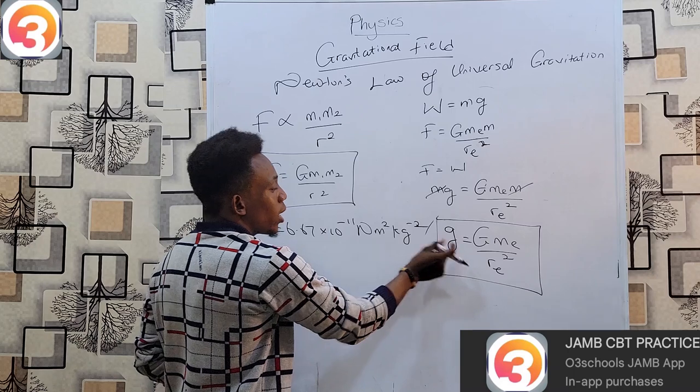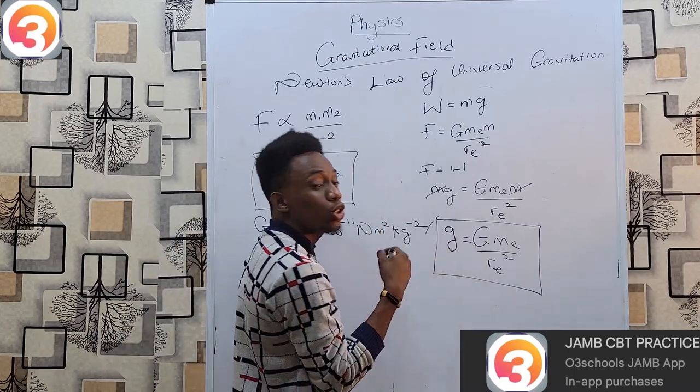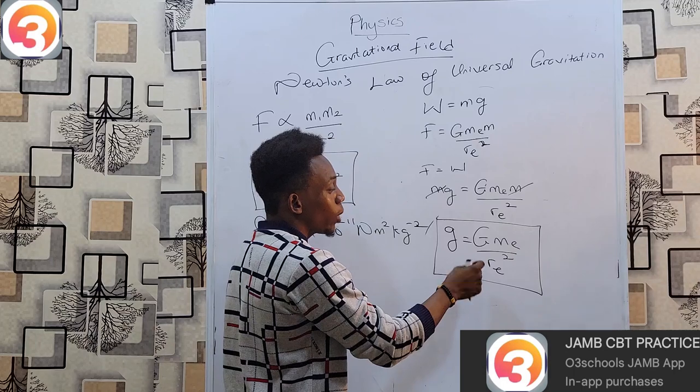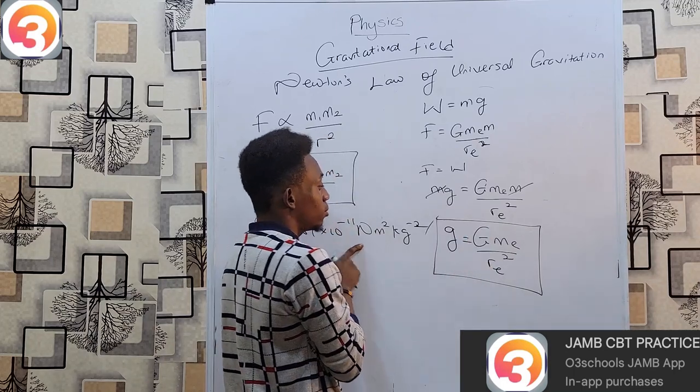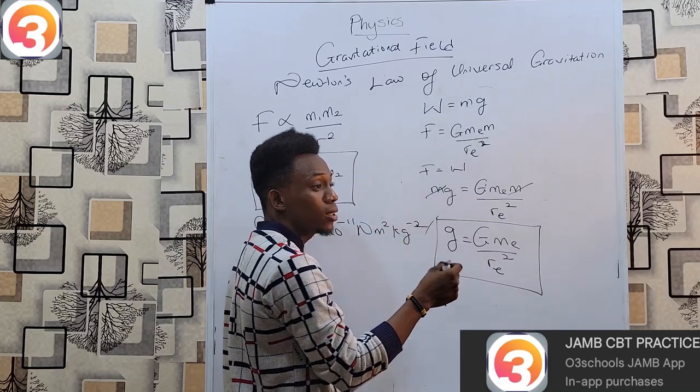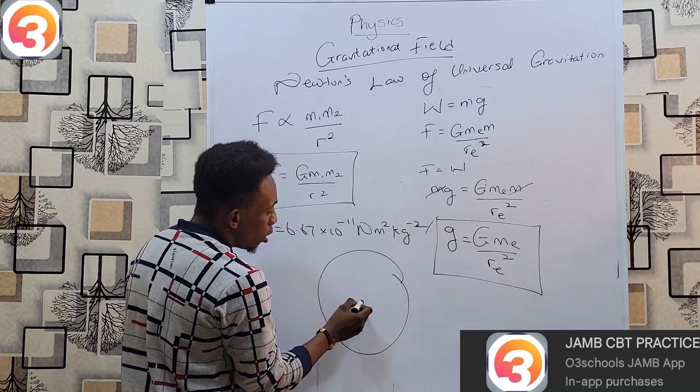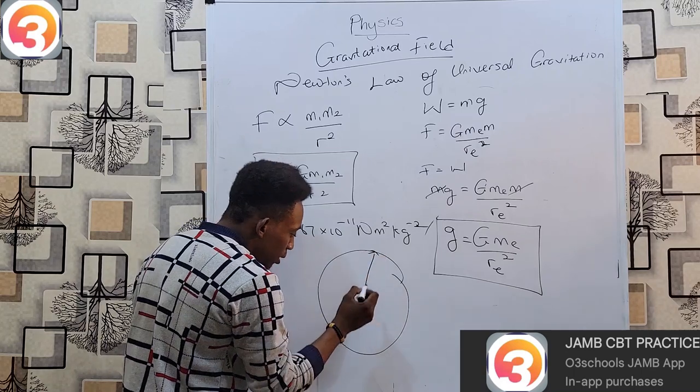Now this formula actually functions in a wide range, not just for earth. To find the gravitational field on any planet, all you require is gravitational constant which is always the same, the mass of that planet, and the radius of the planet.